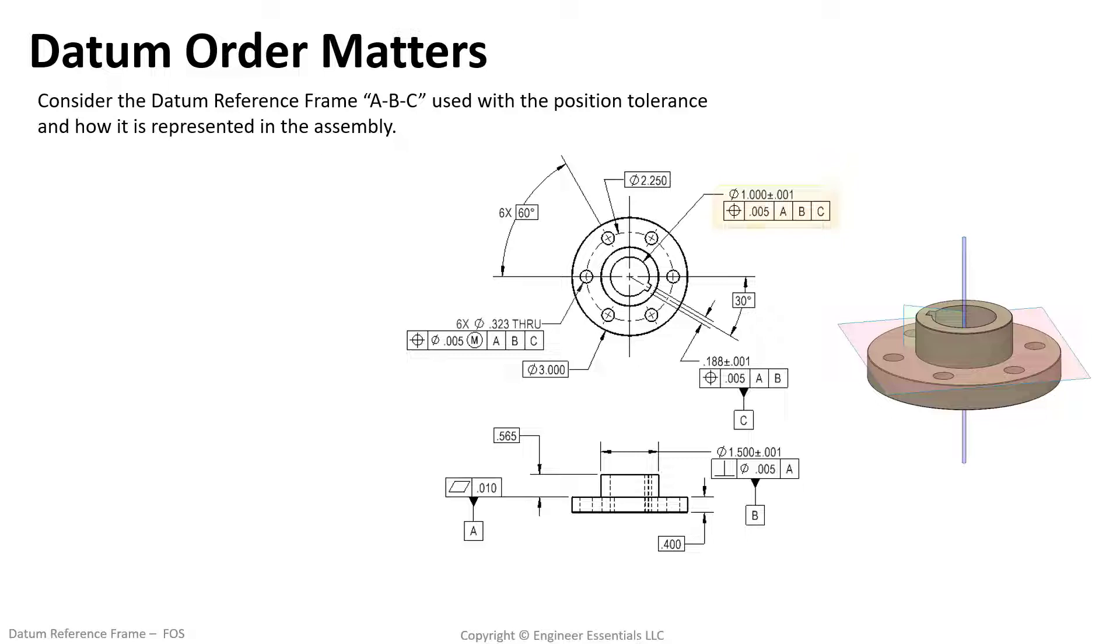For example let's focus on the datum reference frame being referenced in the feature control frame here. It should be noted here that you can use whatever letters of the alphabet you want for your datum references. They don't have to be in alphabetical order. But they should, and I will emphasize they should, mimic the assembly requirements of the part. That's the entire goal of datum reference frames and really GD&T as a whole. We want to mimic assembly requirements and functionality of the part. This ensures the features of the part meet the functionality of the part as a whole.